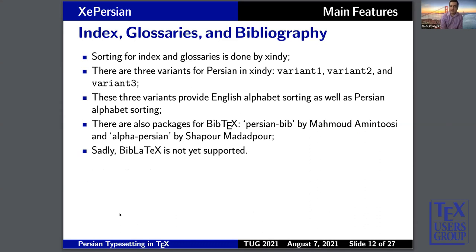For indexes, glossaries, and bibliography: for indexes and glossaries we use Xindy. There are three variants for Persian in Xindy — variant 1, variant 2, and variant 3 — basically the same but differing based on the very first letter of the Persian alphabet. These three variants also allow sorting using the English alphabet. There are also packages for BibTeX: Persian BibP by Mahmoud Amitoussi, and Alpha Persian by Shahpur Emanadpur. Sadly, BibLaTeX is not yet supported.